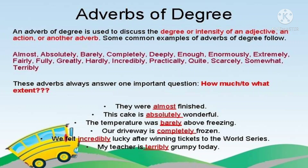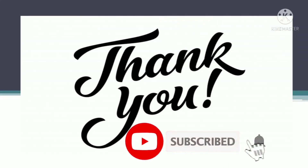Now comes the fourth type of adverb: adverbs of degree. Adverb of degree batata hai kisi bhi adjective ki intensity ya degree ko, kisi bhi action ki intensity ko. For example: 'They were almost finished' — almost is the adverb of degree, meaning woh lagbhag complete kar chuke the. Another example: 'This cake is absolutely wonderful' — 'absolutely' is the adverb of degree. If you liked my video, please do subscribe to my channel and hit the notification button for more videos.